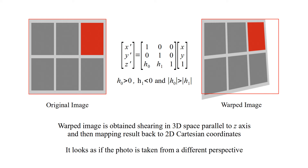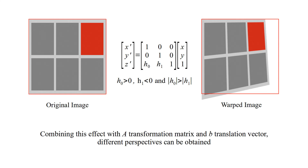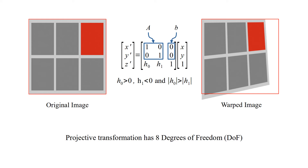Warped image is obtained by shearing in 3D space parallel to the z-axis and then mapping the result back to 2D Cartesian coordinates. It looks as if the photo is taken from a different perspective. Combining this effect with the A transformation matrix and B translation vector, different perspectives can be obtained. Projective transformation is controlled with 8 parameters, so projective transformation has 8 degrees of freedom.